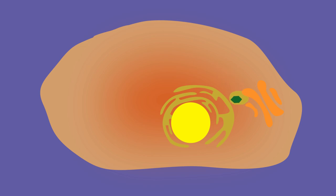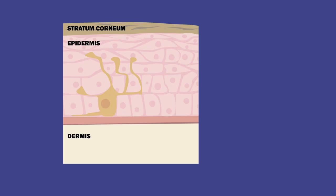Immature viruses go through the Golgi and are released from the cell when they are mature. This is how dendritic cells of the skin called Langerhans cells, which are present in the epidermis and act as antigen-presenting cells, get infected.